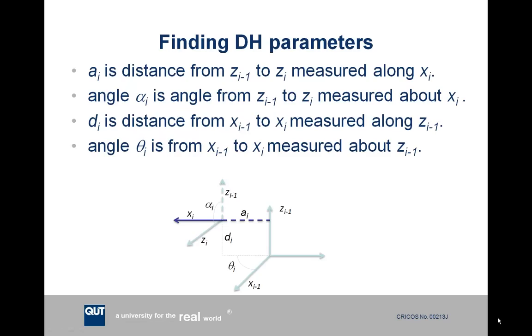Once you've drawn your diagram and labelled all your axes according to this set of rules, you need to find the values of these four DH parameters for each reference frame. The a subscript i parameter is the distance from zi-1 to zi measured in the xi direction. The angle alpha i is the angle from zi-1 to zi measured rotating around the xi axis. The di parameter is the distance from xi-1 to xi measured along the zi-1 axis, and the angle theta i is from xi-1 to xi measured about the zi-1 axis.